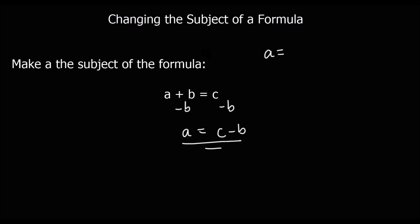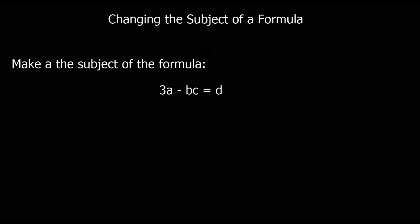So that's what we're trying to do with these questions. Here's a slightly more complicated example, but it's just following the same steps — we just have to get A by itself again. I want to get rid of this BC thing here. It's minus at the moment, so if I plus it, I'll get rid of it from this side. But I've got to do the same to both sides, so I plus it to both sides of the equation.